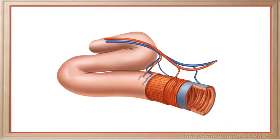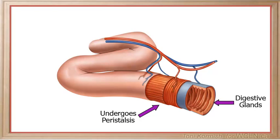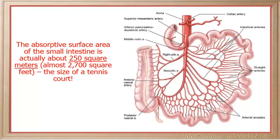The muscular walls of the small intestine undergo peristalsis to help move food along through the digestive tract. The inner surface of the small intestine also contains glands that secrete digestive enzymes into the intestinal tract to assist with the chemical breakdown of food. The small intestine has a large surface area and is highly vascularized, both of which assist in the rate of absorption of nutrients across the intestinal wall.